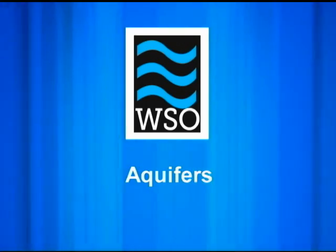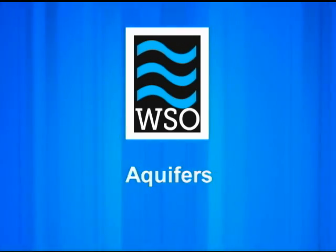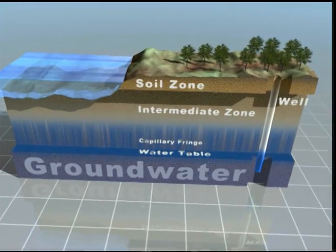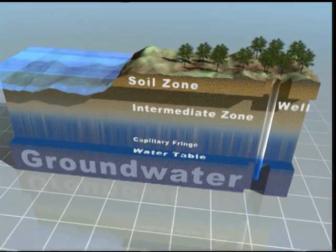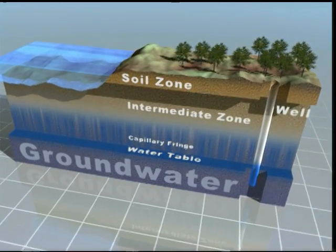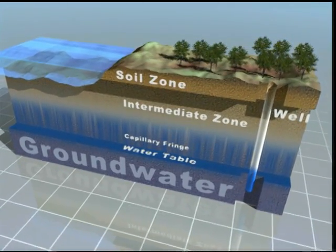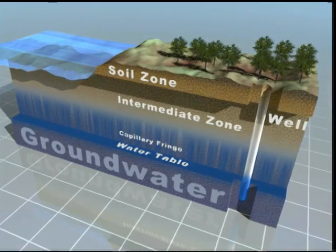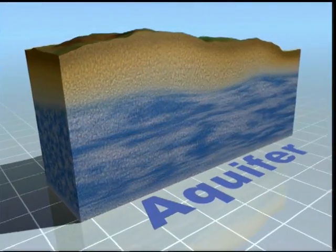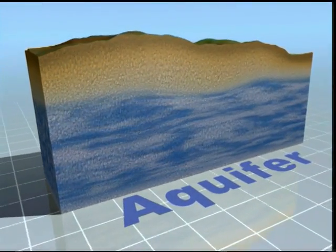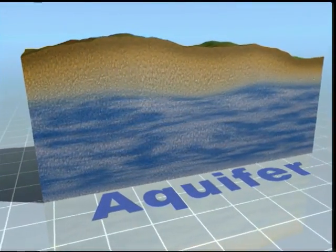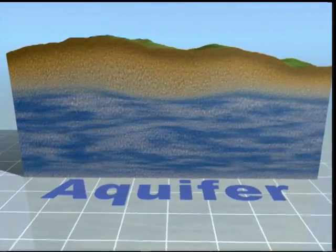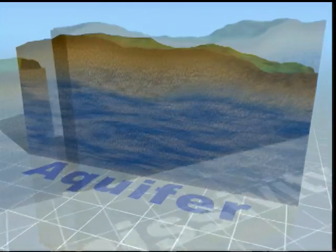Groundwater is defined as water contained in interconnected pores located below the water table in an unconfined or confined aquifer. An aquifer is soil or rock that transmits water. Confining units do not.